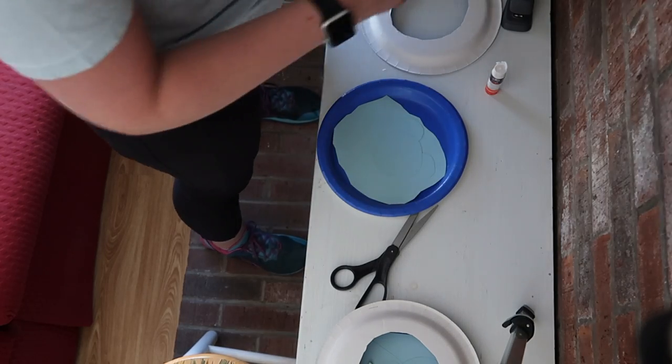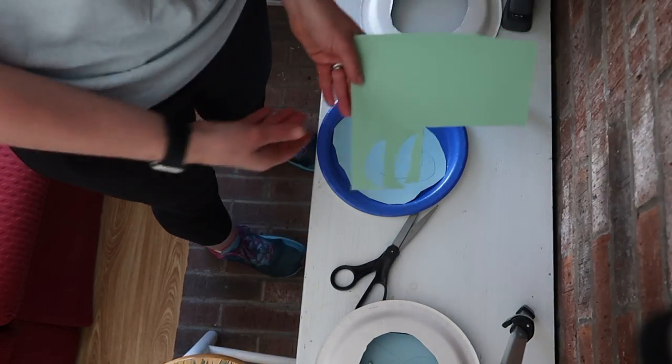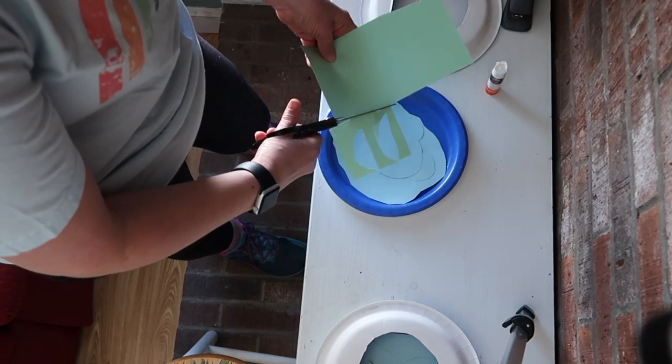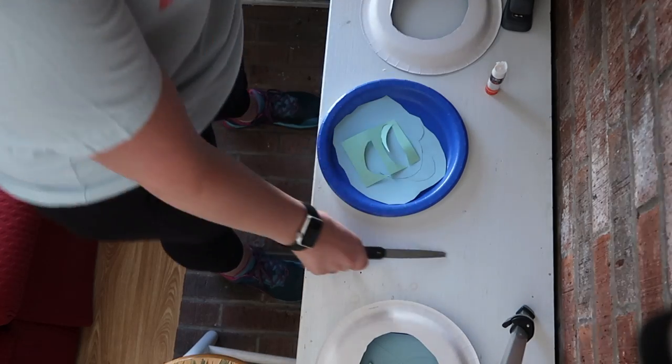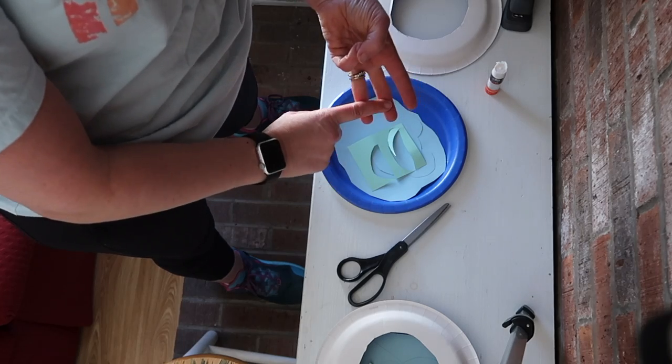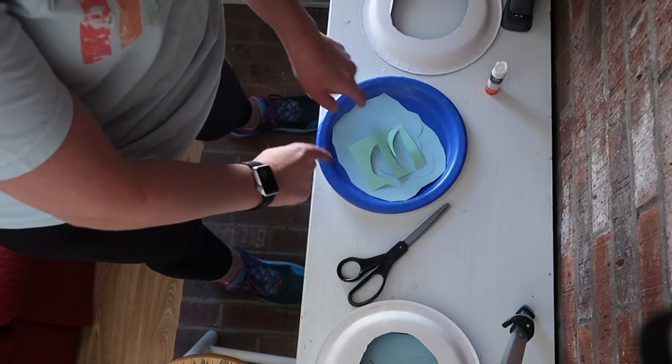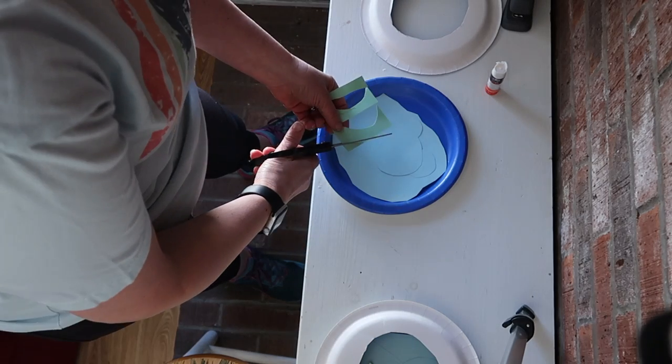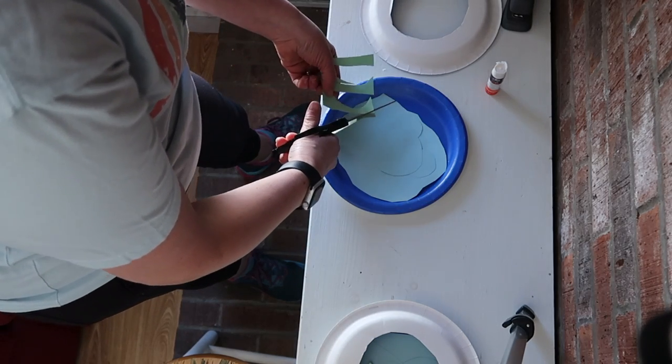Now remember when we did the paper doll Yodas too, I have some of those little green scraps leftover. I'm also going to cut those out. Now if you don't have these, you have green yarn, green paint, magic marker, paper cleaners, anything can be the little seagrass in your little Dory fishbowl.